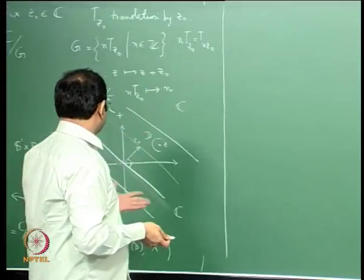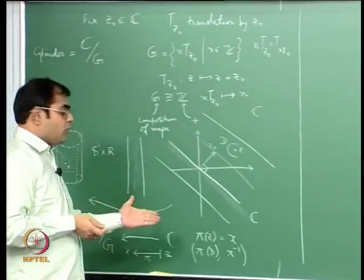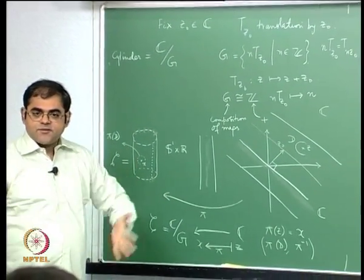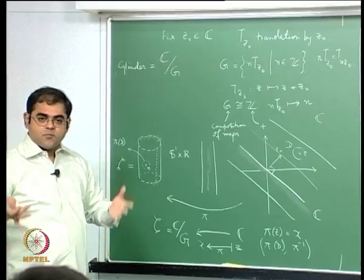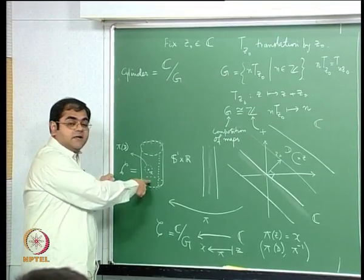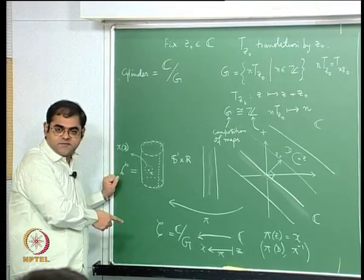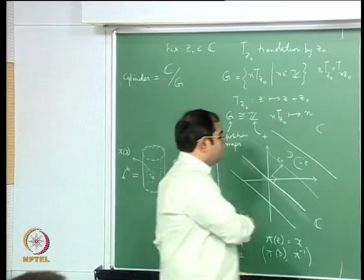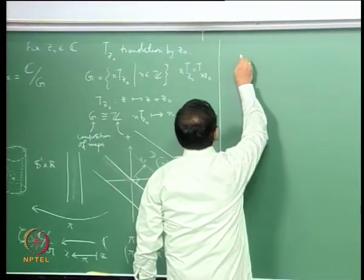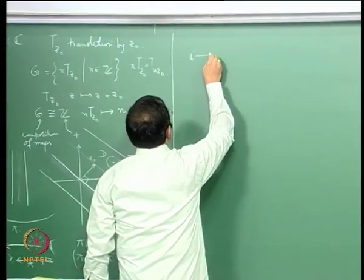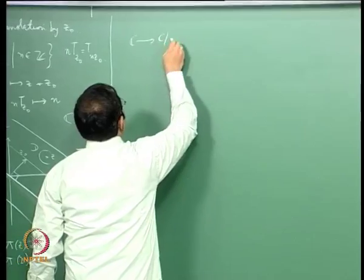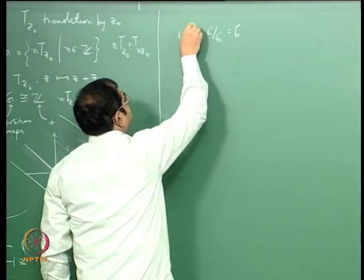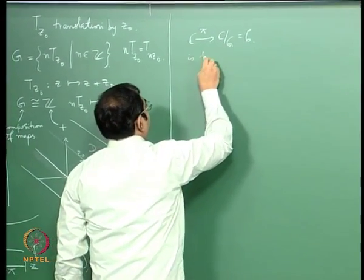Of course that is not completely enough to give a Riemann surface structure — we require that these charts are compatible whenever they overlap. That condition was also checked last time: we found that the transition functions are precisely translations by a certain integer multiple of z₀, and these are certainly injective holomorphic maps — holomorphic isomorphisms. Since the transition functions are holomorphic, we have compatibility of the charts, so this is an atlas, and with this atlas the cylinder becomes a Riemann surface. The natural map π from ℂ to ℂ/G is a holomorphic map.